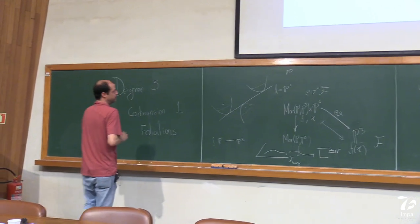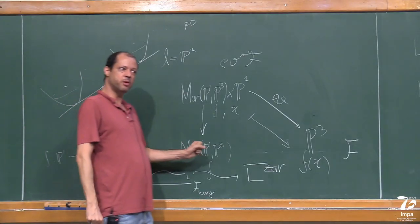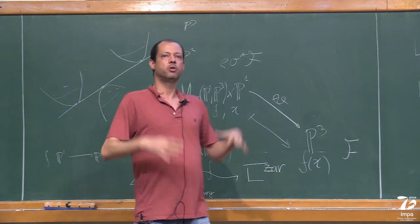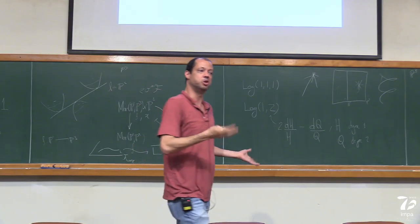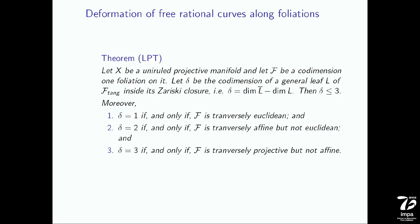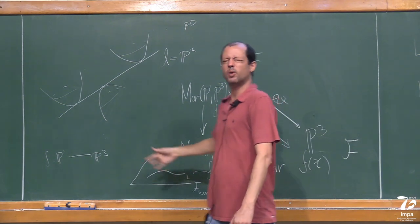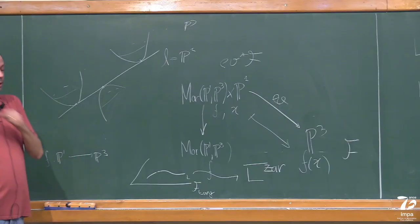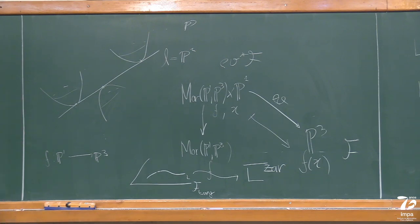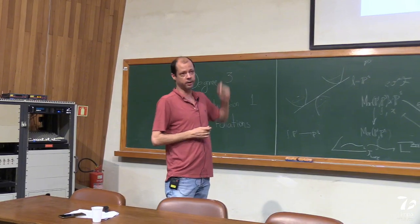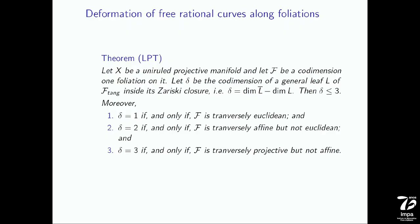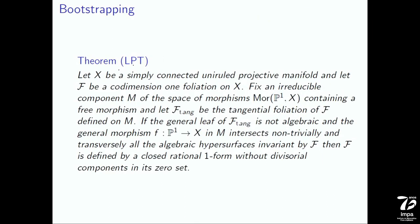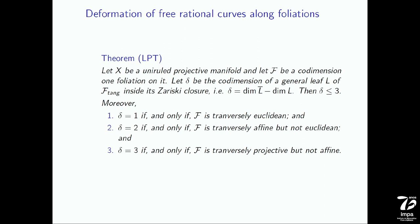Even though we began looking at lines on P^3, the computations and statements work in full generality — I do not need to be in P^3, I can take any projective manifold. What matters is that we have free morphisms, meaning no obstructions to deforming the maps in any direction. We proved this result jointly with Loray and Touzet.